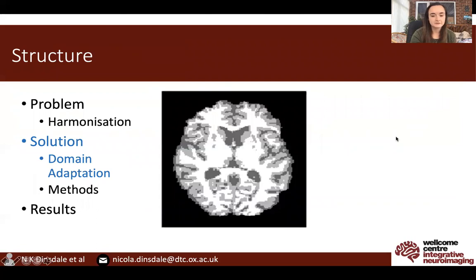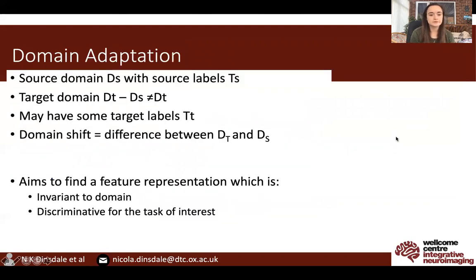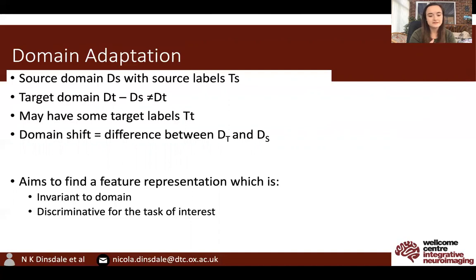So we look towards domain adaptation for a solution. Domain adaptation assumes that we have a source domain DS with source labels TS for a given task, and a target domain which is related but not identical to the source domain, which may or may not have target labels. The domain shift describes the degree of difference between the two domains, where the greater the degree of domain shift, the more likely a model trained on the source domain will not work on the target domain. The aim of domain adaptation is to find a feature representation which is invariant to the domain and discriminative for the task of interest, which — if we replace domain with scanner, considering the data collected on each scanner with a given acquisition protocol as a domain — is the same as our harmonisation task.